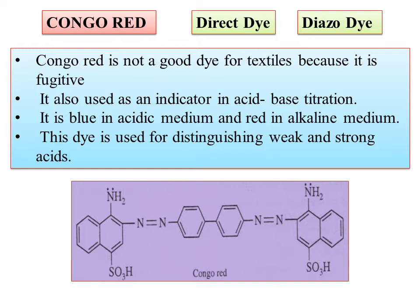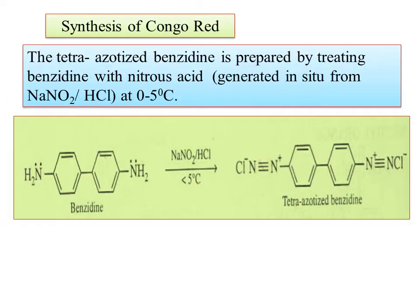You can use dye as an indicator in acid-base titration. It is black in color in acid and red in color in the basic medium. Weak and strong acid can be distinguished because we use it. We need to prepare the diazotization reaction. We are going to do the diazotization reaction.